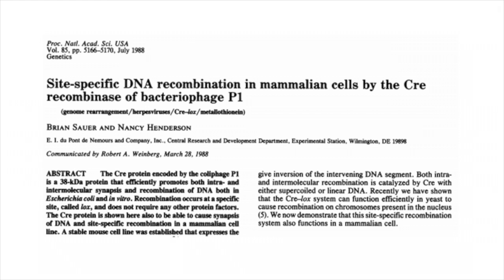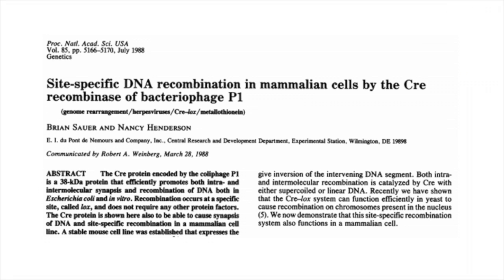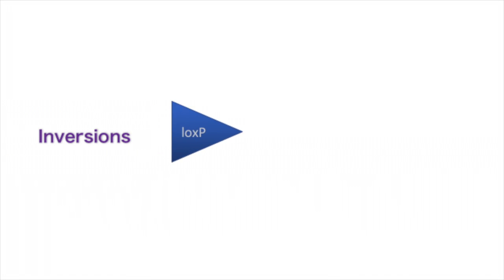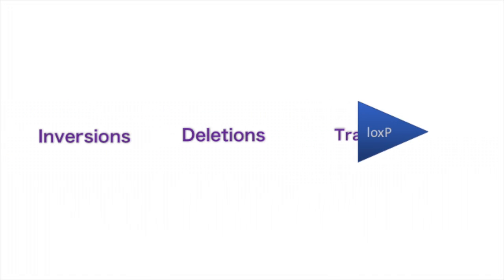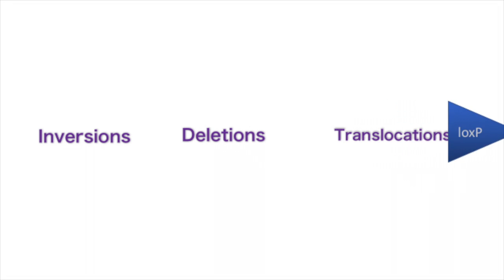A year later in 1988, Sawyer and Henderson demonstrated the functionality of the system in mammalian mouse cells, tagging it with an idea that using Cre-LoxP in eukaryotes may provide a method for understanding and controlling genome arrangements. The Cre-LoxP system functions as a control mechanism for the incorporation of inversions, deletions, and translocations into a genome.